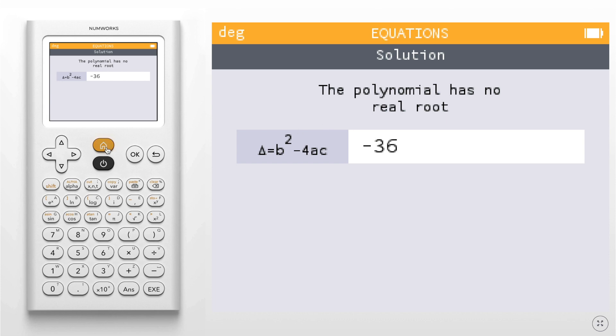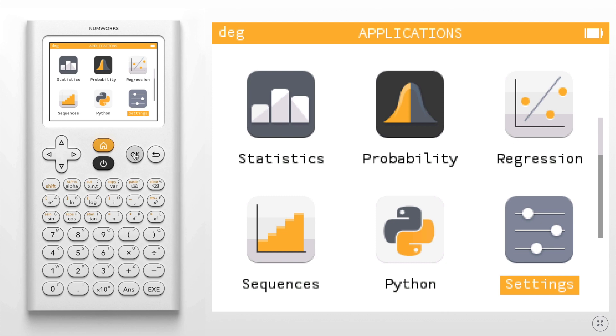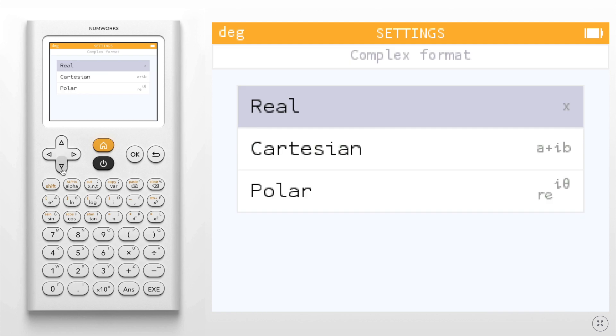we're going to press home, go down to settings, hit ok. We're going to go down to complex format. You'll currently see that we are in real mode, press ok, go down and press ok on Cartesian.